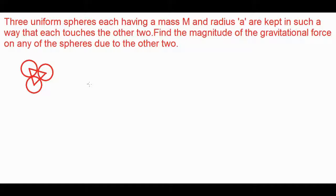Welcome to this video. This question says that three uniform spheres, each having a mass M and radius a, are kept in such a way that each touches the other two. Find the magnitude of the gravitational force on any of the spheres due to the other two. So these are my spheres and the radius of these is given as a.